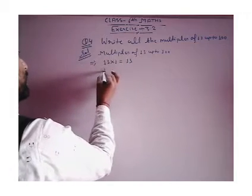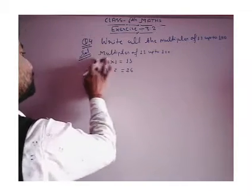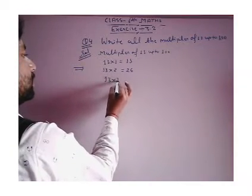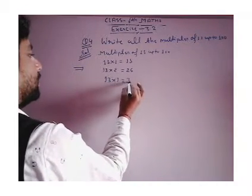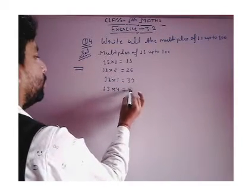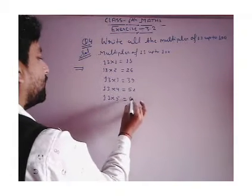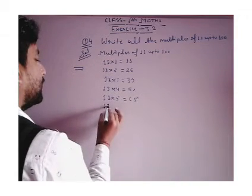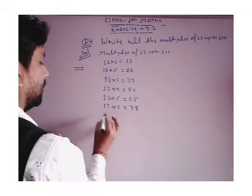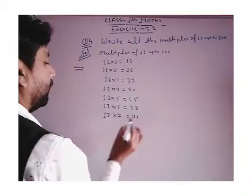13 × 2 = 26. 13 × 3 = 39. 13 × 4 = 52. 13 × 5 = 65. 13 × 6 = 78. 13 × 7 = 91.